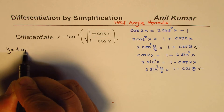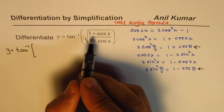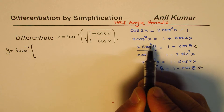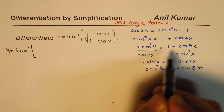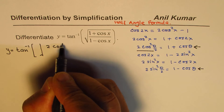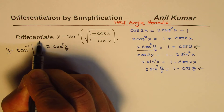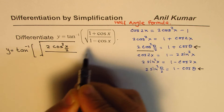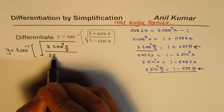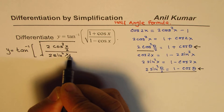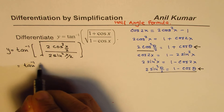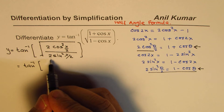Within the square root we have 2cos²(x/2), divided by 1 minus cos x, which is 2sin²(x/2). As you can see, the 2 and 2 cancel, leaving cos²(x/2) over sin²(x/2) inside the square root.